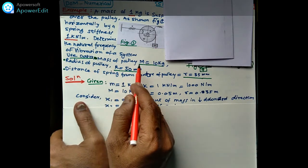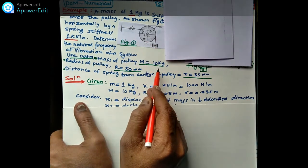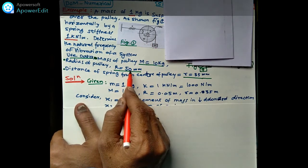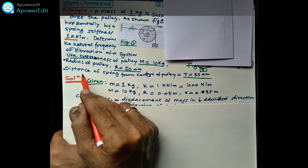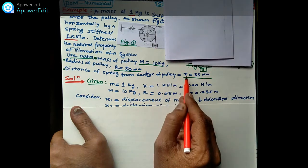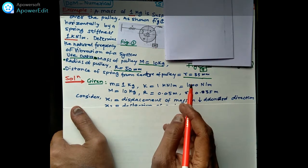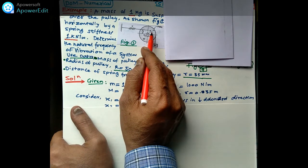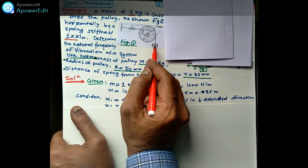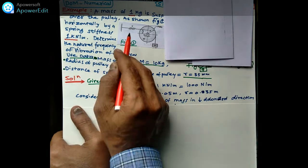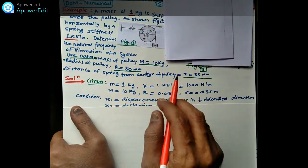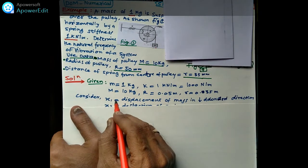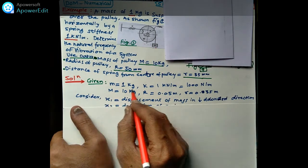The mass of the pulley, capital M, is 10 kg. The radius of the pulley, capital R, is 50 millimeters. The distance of the spring from the center, small r, is 0.35 millimeters. All dimensions — small r, capital R, capital M, small m — are given, as well as K.